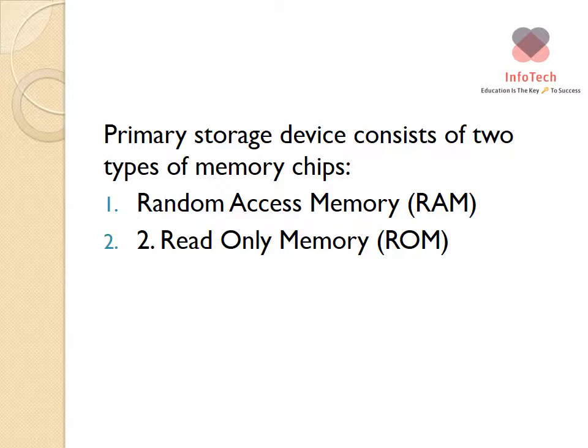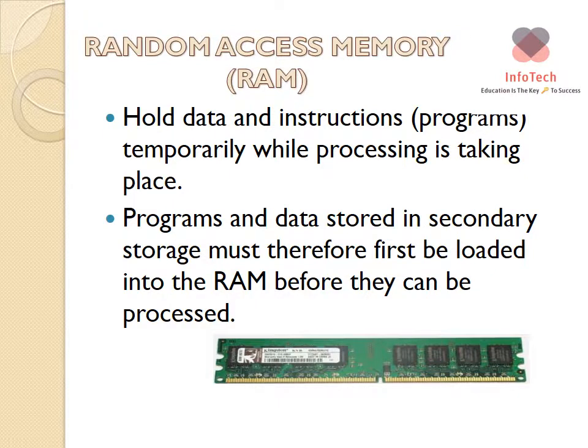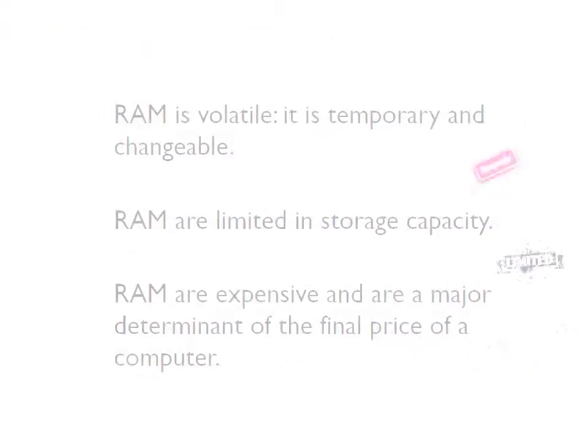A primary storage device consists of two types of memory chips: you have the Random Access Memory, known as RAM, and you also have the Read-Only Memory, known as ROM. Random Access Memory holds data and instructions, or programs, temporarily while processing is taking place. Programs and data stored in secondary storage must first be loaded into RAM before they can be processed by the CPU.